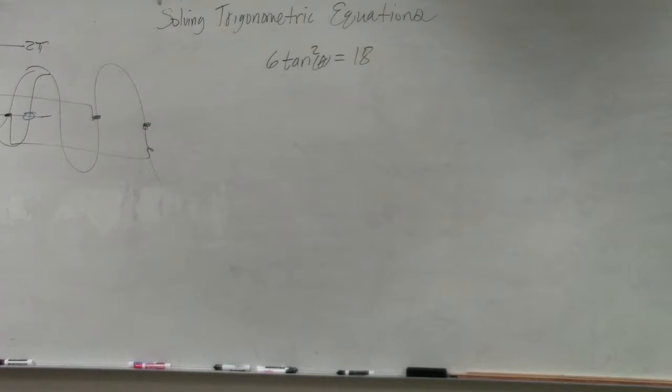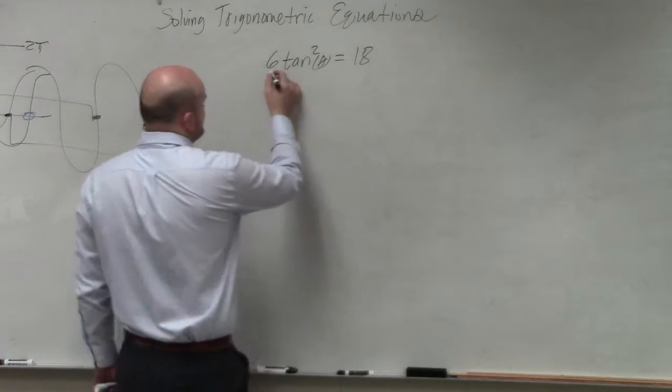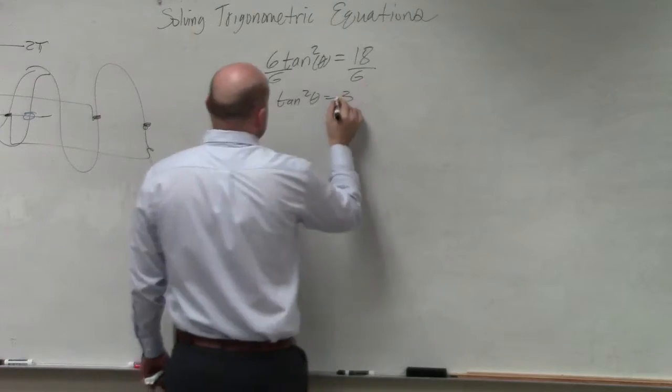So in this example, first thing you want to do is divide by 6. Tan squared of theta equals 3.